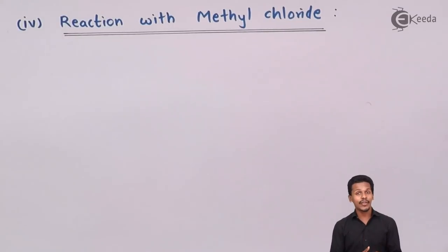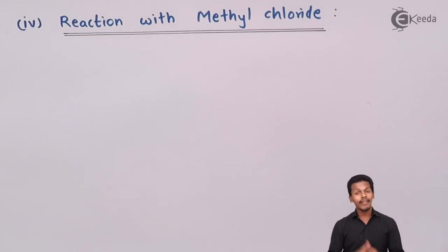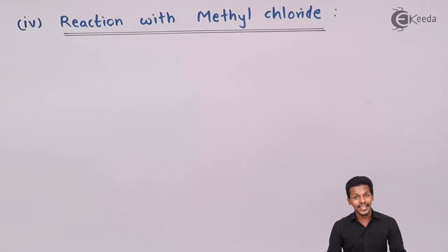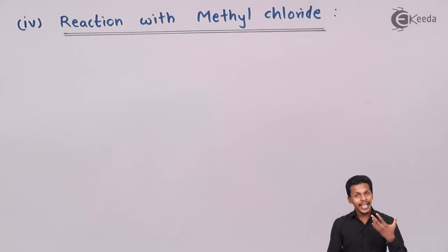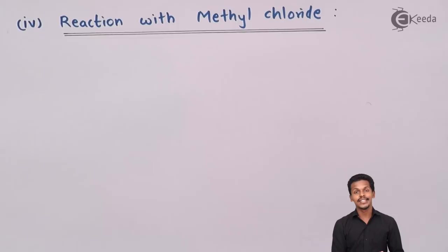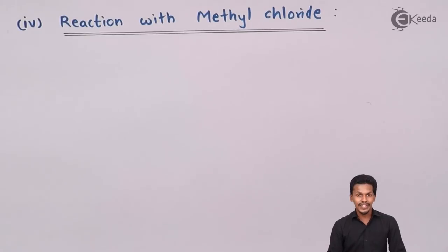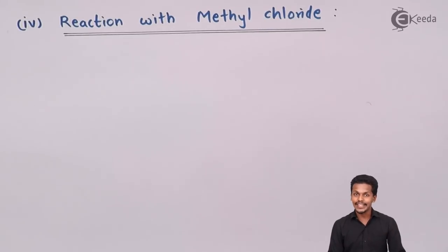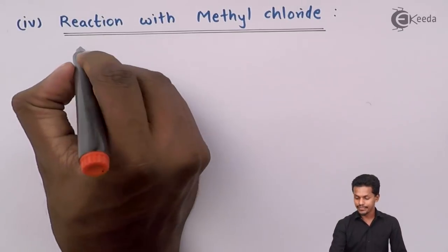The next reaction is the reaction with methyl chloride. Whenever chlorobenzene is reacted with methyl chloride, the reaction does not take place on its own — we need a particular catalyst. In this case we are talking about Friedel-Crafts alkylation. In Friedel-Crafts alkylation, we use an alkyl chloride to attach the alkyl group as a substituent towards chlorobenzene or any aromatic compound. For that we must use anhydrous AlCl3 as the catalyst.